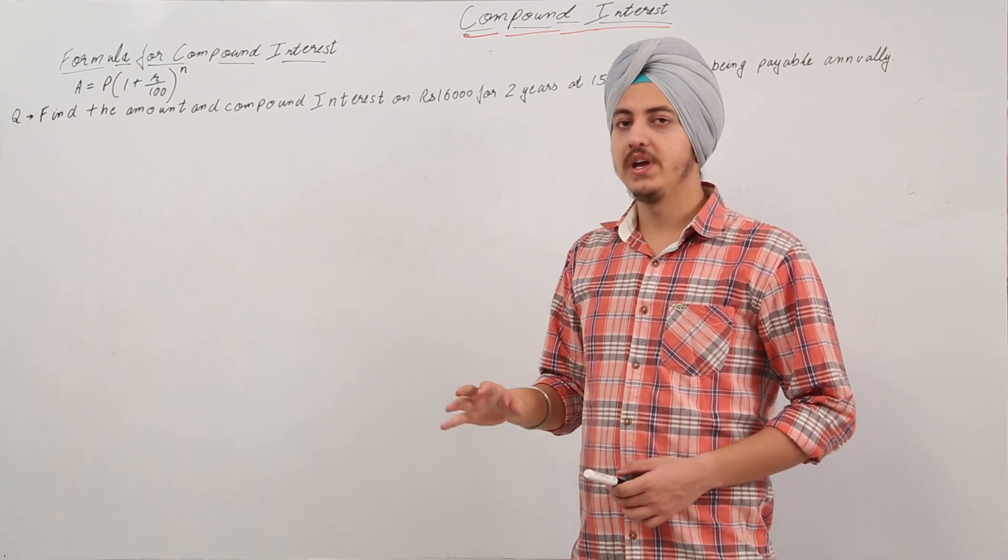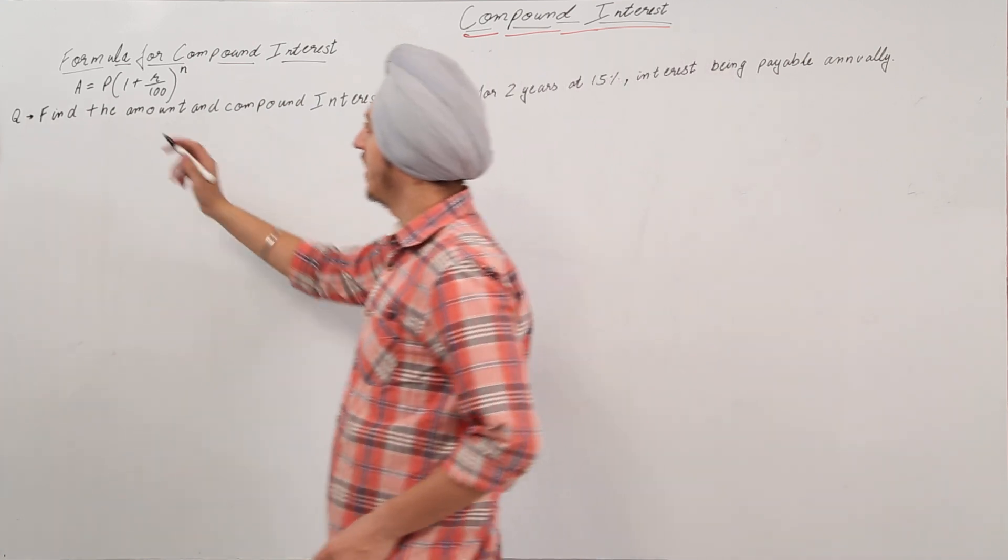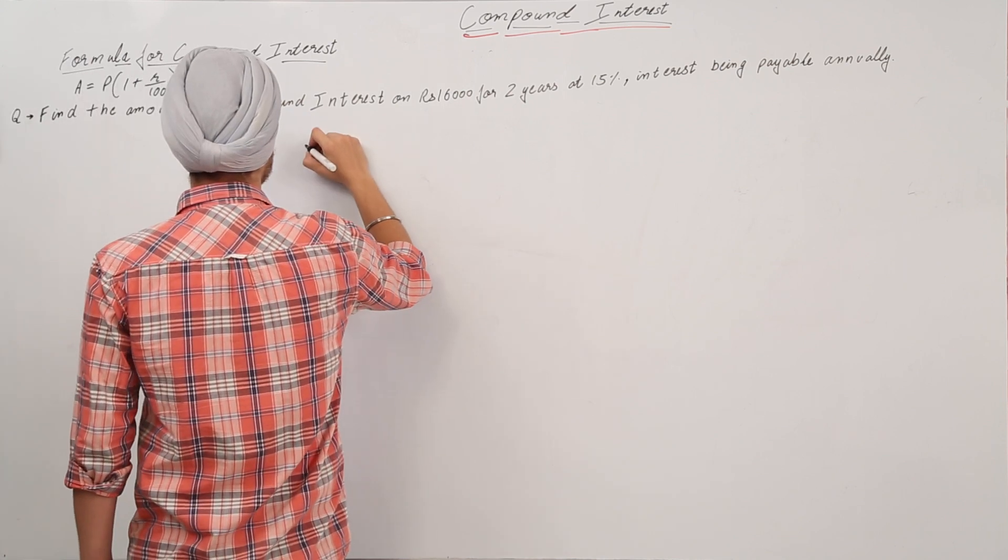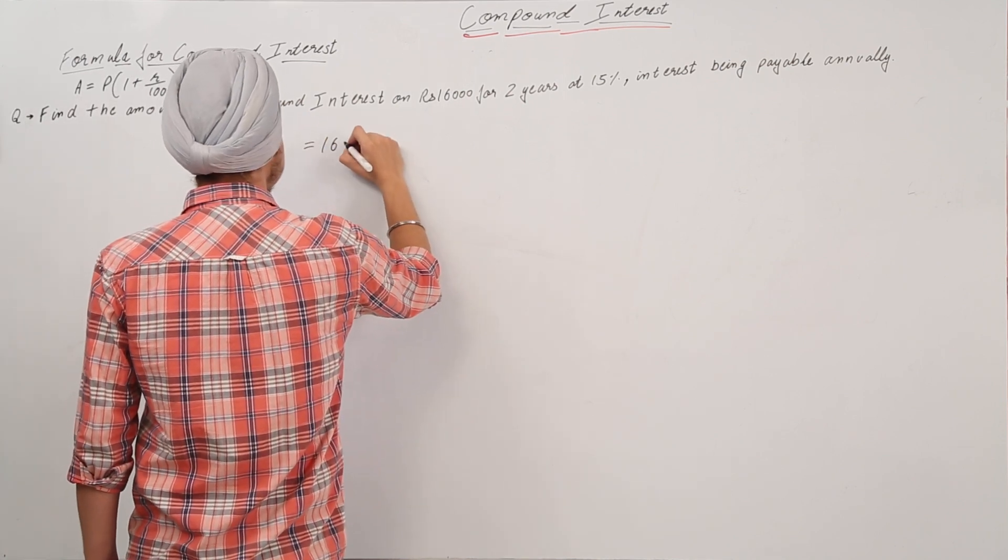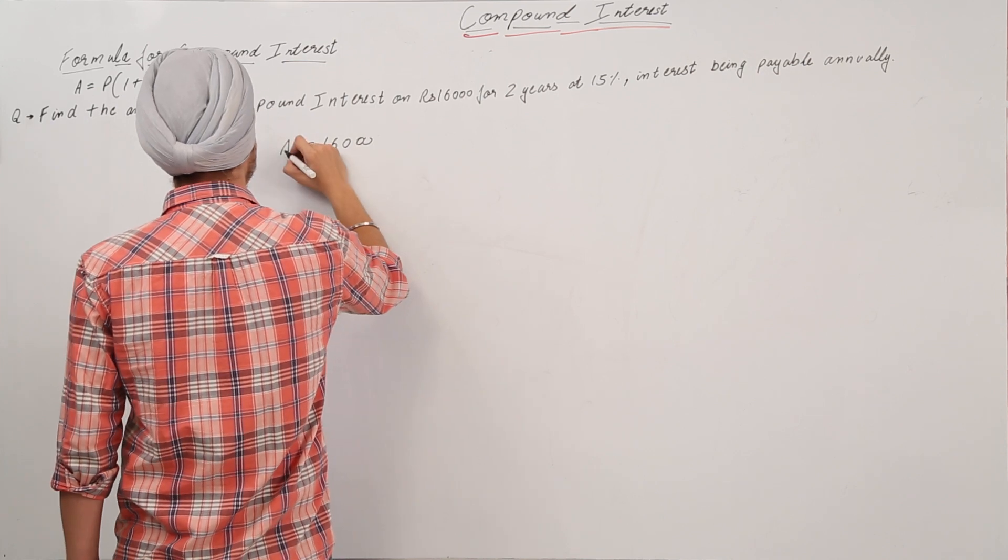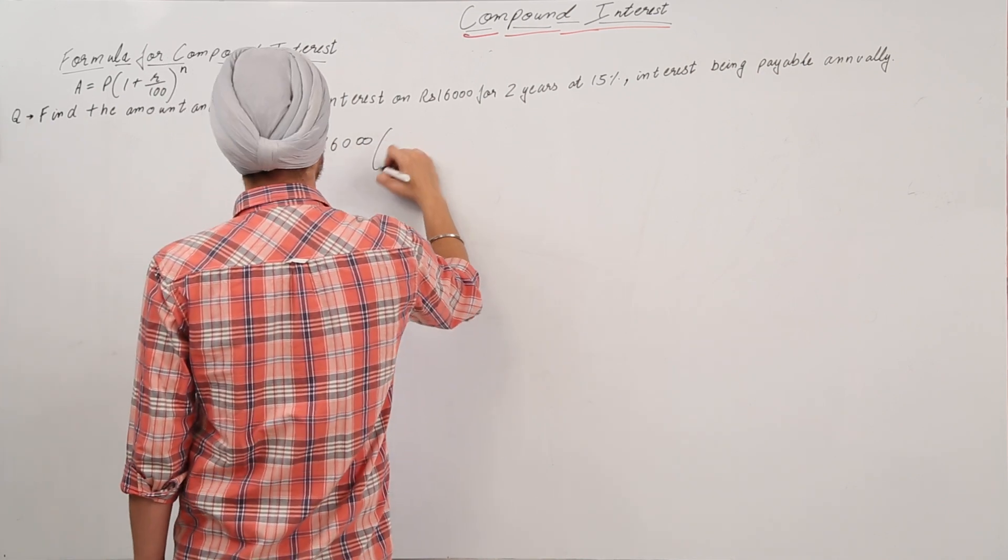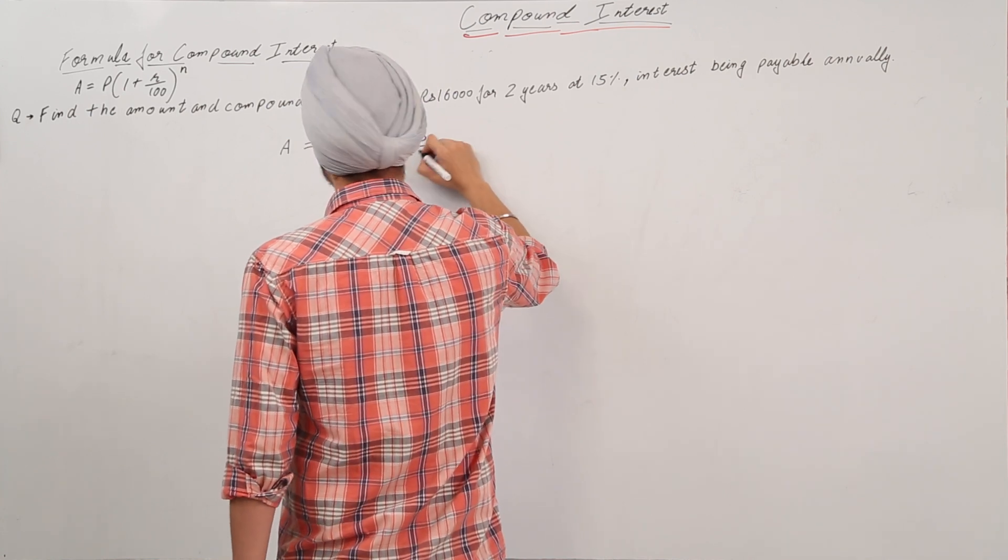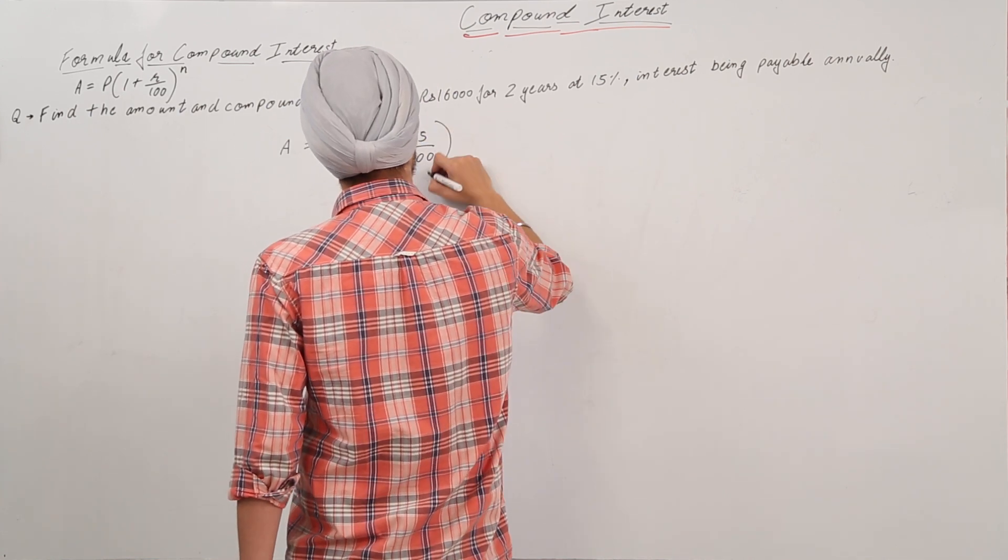So we have the formula A equal to P, where P means the principal that is equal to 16,000 into 1 plus R is 15 upon 100 raised to power time that is two years.